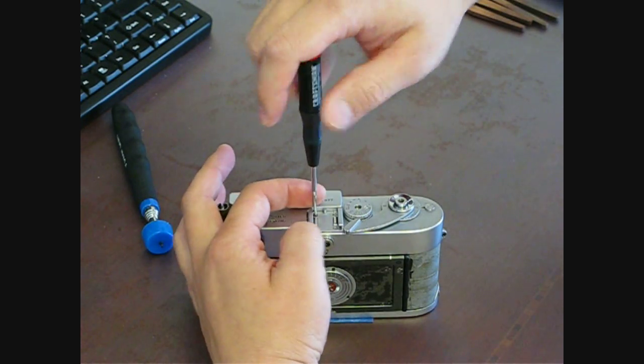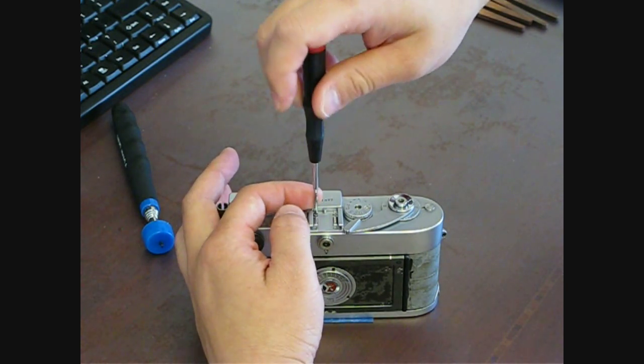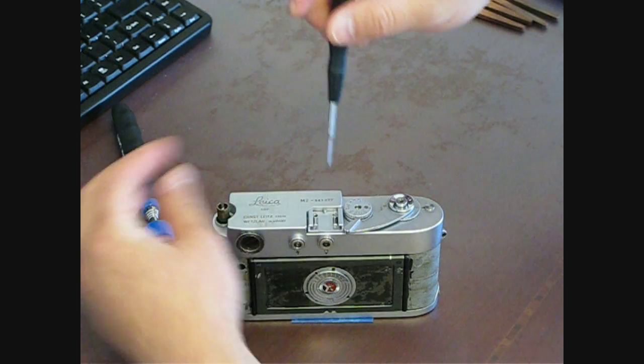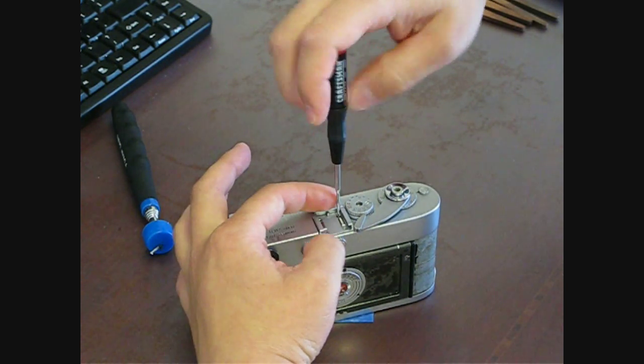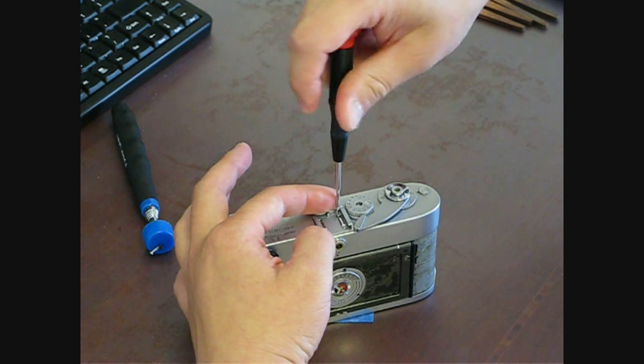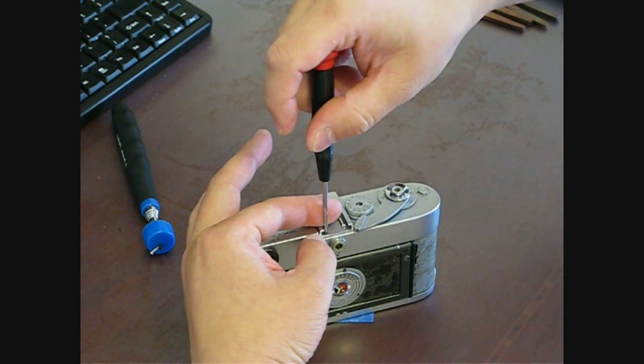That screw all the way, the stopping screw for the flash, you don't need to take off. You only really need to take these four screws that are holding the cold shoe in place.